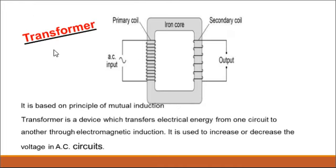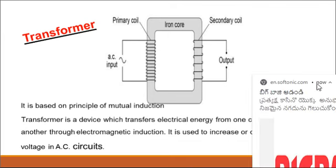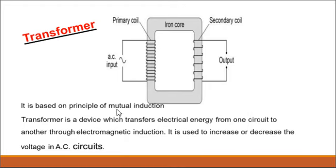Another topic: transformer. A transformer consists of a primary coil, secondary coil, and iron core — with AC input and output. A transformer is based on the principle of mutual induction. It is a device which transfers electrical energy from one circuit to another through electromagnetic induction, and is also used to increase or decrease the voltage in AC circuits.